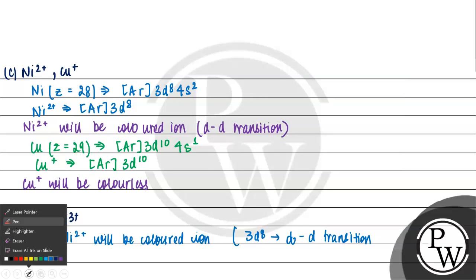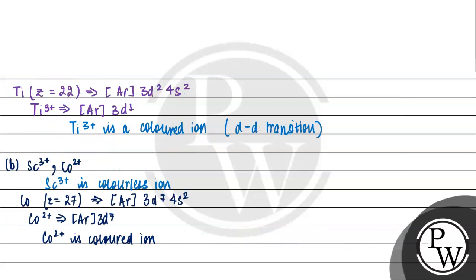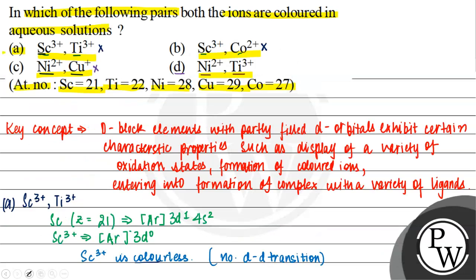Ti³⁺ has outer electronic configuration 3d¹, and due to d-d transition it is also a colored ion. So our option D is the correct answer to the question, because both ions — Ni²⁺ and Ti³⁺ — are colored in aqueous solution. I hope you understood the question well. Best of luck!